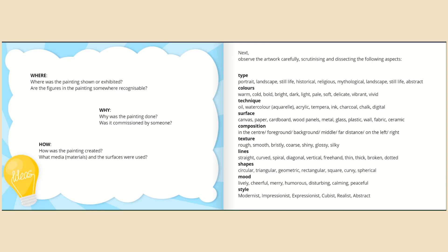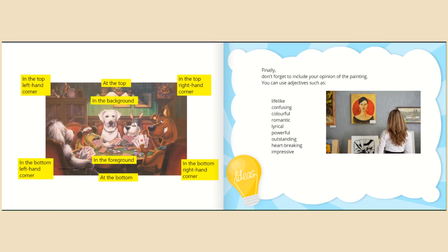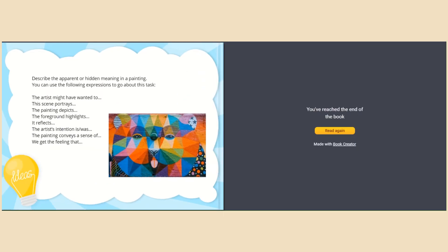The type, colors, technique, surface, composition, texture, lines, shapes, mood, and style. You may want to pause this video lesson to study this list of words more closely. And finally, don't forget to include your opinion of the painting. Describe both the apparent — meaning the visible — or the hidden message or meaning in the painting. Here are some useful expressions.